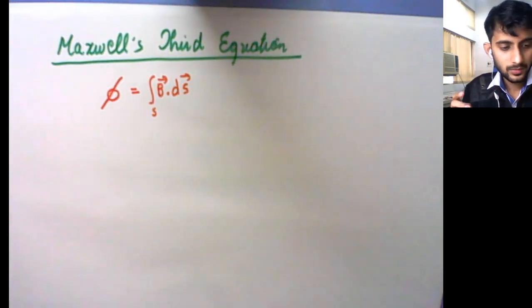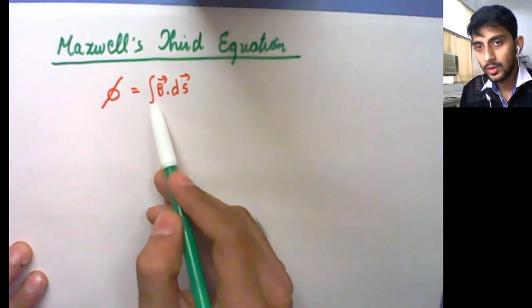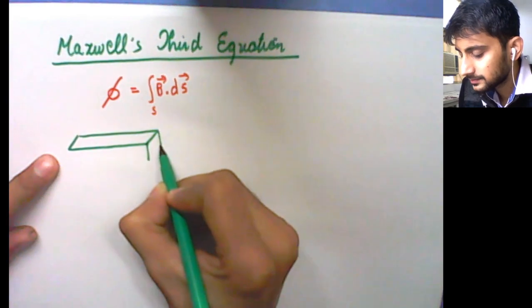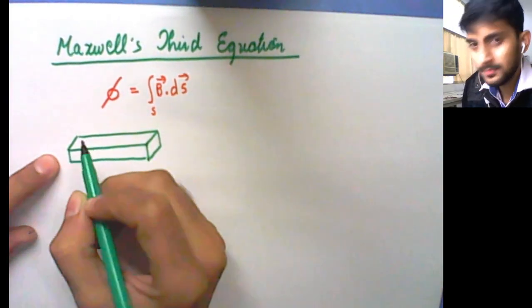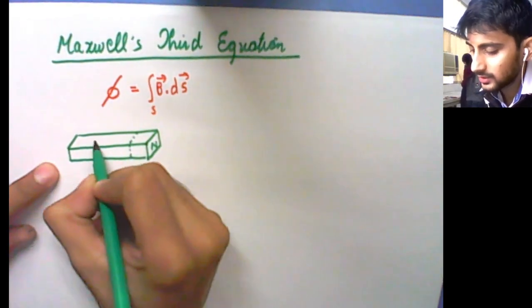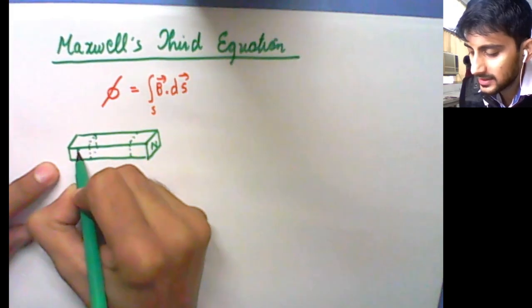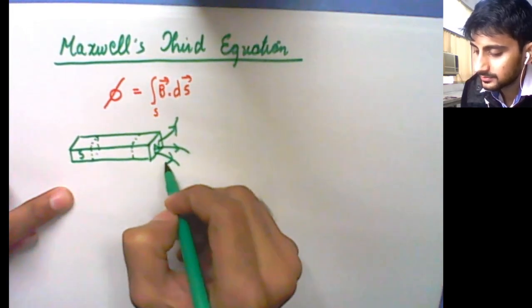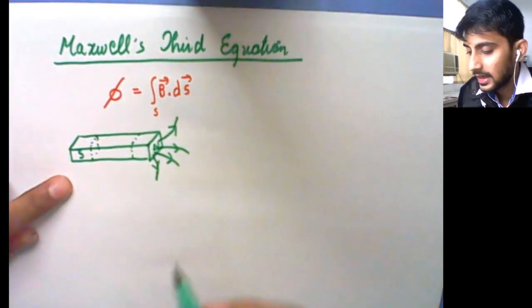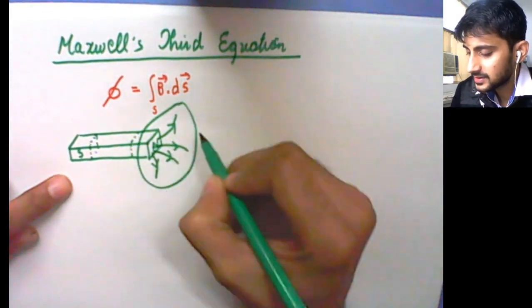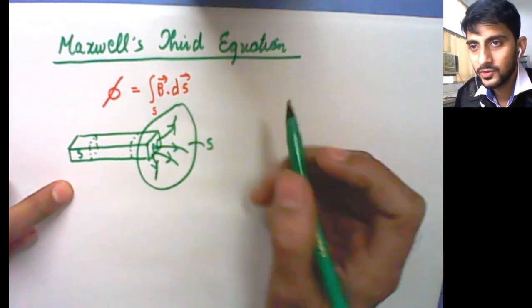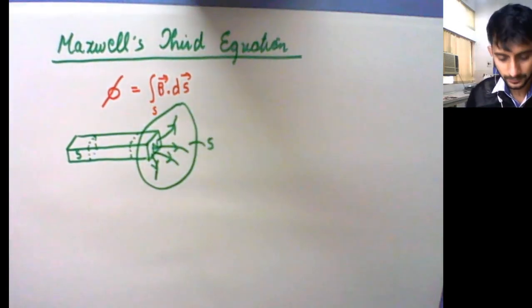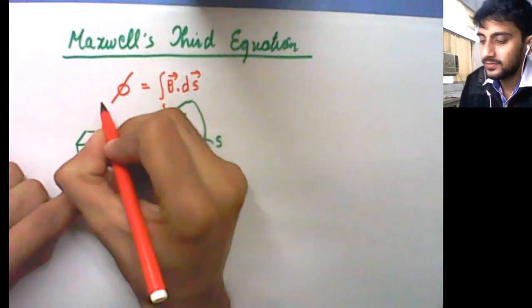From Faraday's law, consider a magnet with north and south poles where field lines emerge. We are concerned only with an open surface — how many field lines pass through it — not a closed surface enclosing a volume. From Faraday's law of electromagnetic induction, if this is the magnetic flux phi_B, then time-dependent variations in flux induce an EMF.